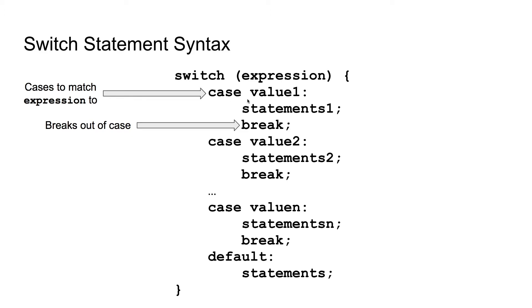Then you have cases that the expression could fall under. You could have something like case the character A, case the character B, case the character C, and so on. You can have as many cases as you want. And then you have the final case, which would be the default case, noted by the default keyword.